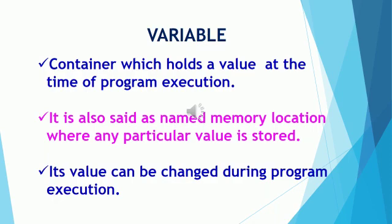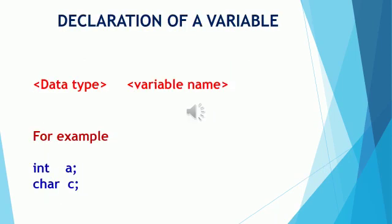A variable is a container which holds a value at the time of program execution, meaning it contains some value within it. Variables are also known as named memory locations where a particular value is stored. The value of any variable can be changed during program execution. A variable is declared as the data type followed by a space and then the variable name — for example, int followed by a variable name.